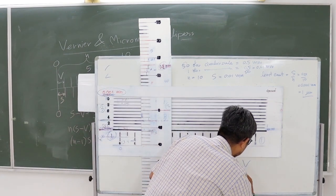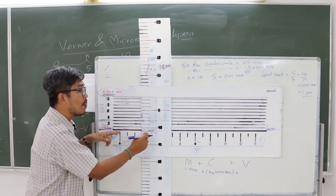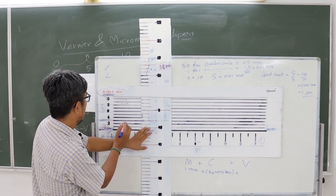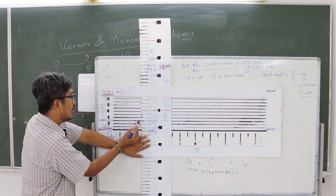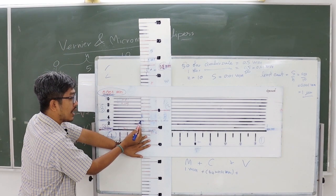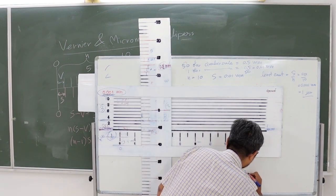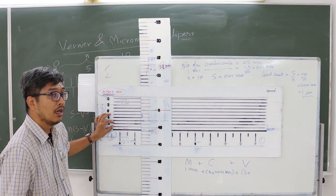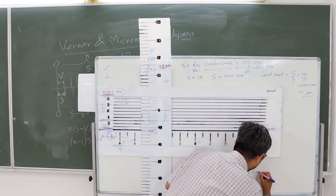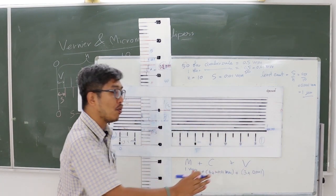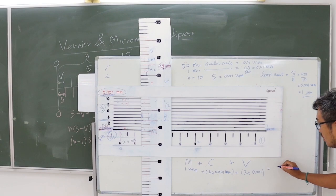Finally, we find the value from the vernier scale using the same concept: find the single line of the vernier scale that is aligned with a line of the circular scale. In this example, line number 3 of the vernier scale is aligned, so there are 3 divisions of vernier scale. The value from the vernier scale is 3 times 0.001 mm, which is 0.003 mm. Summing the values from the main scale, circular scale, and vernier scale, we get 1.443 mm.